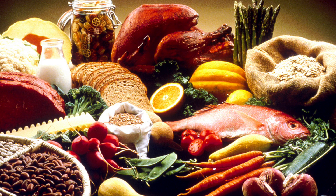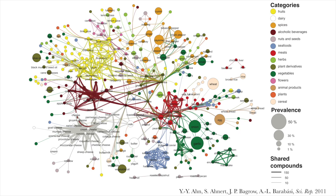And if you look at our food, we can also find networks. This was my own paper, where we connected culinary ingredients to each other if they share a lot of flavor compounds. You can see all kinds of interesting clusters — meat, fruits, seafood — and you can use this network to study what we eat and what we like. Again, networks are everywhere.